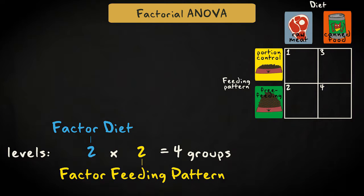With two factors, each with two levels, we have two times two equals four groups. We call this a two factor analysis, with a two by two design.